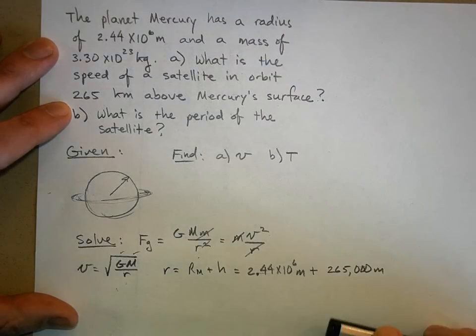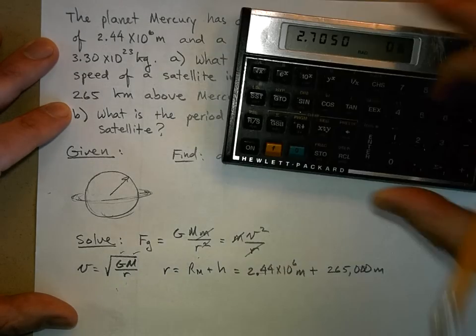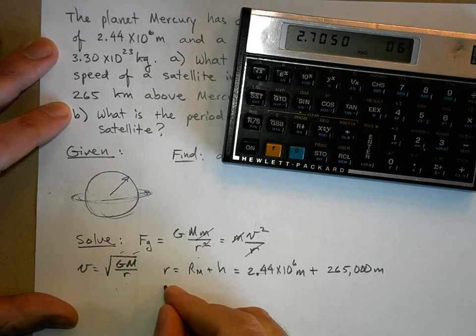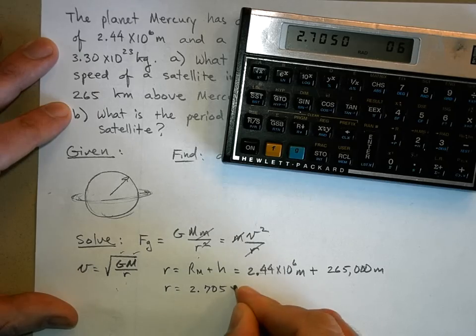Get your calculator out. 2.44 times 10 to the 6 and add that to 265,000, and you get r equals 2.705 times 10 to the 6 meters. Is that what you got?